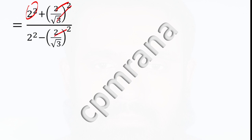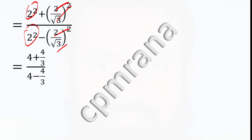Square root gives 4 by root 3, and 2 square is 4. So we have 4 plus 4 by 3, and 4 minus 4 by 3.